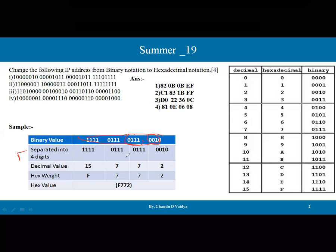The second step is to separate into four digits: first group is 0 0 1 0, second is 0 1 1 1, third is 0 1 1 1, and the last is 1 1 1 1. Now we determine the decimal value for each binary group using binary weightage: 1, 2, 4, and 8. For example, placing 0 0 1 0, the bit is on at position two, so the decimal value is 2.